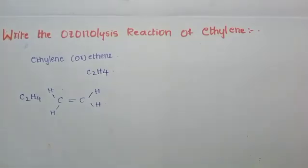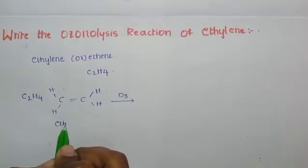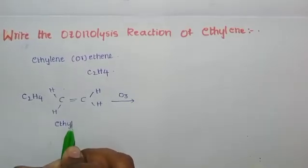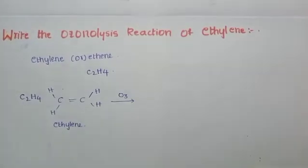Ozonolysis is the addition of ozone. Ozone is O3. When we add O3 to ethylene, which is an unsaturated compound, we get the ozonide — the ethylene ozonide.